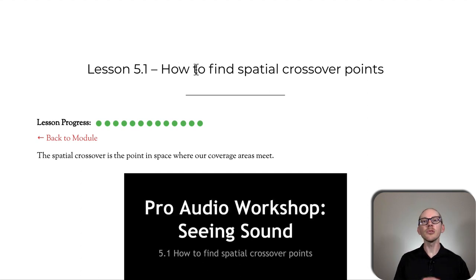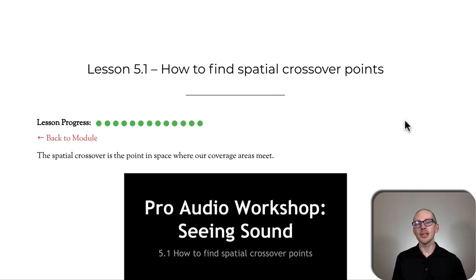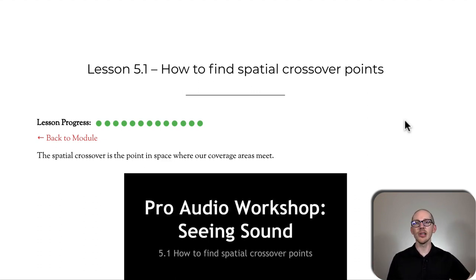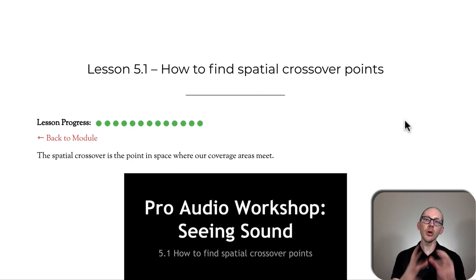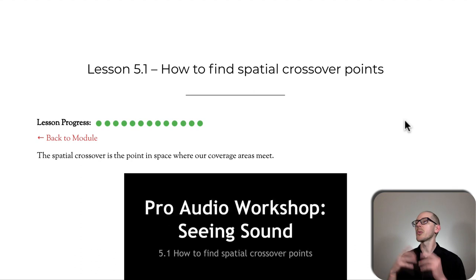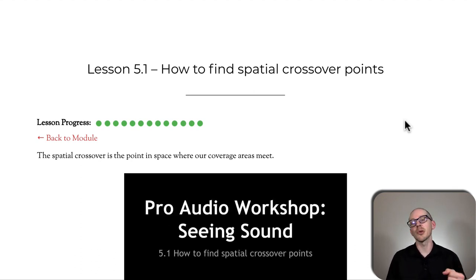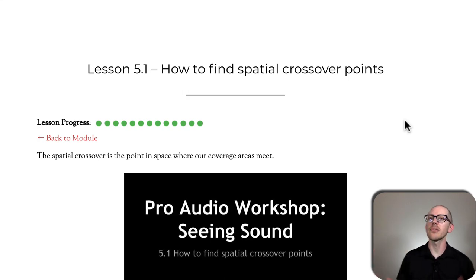Lesson 5.1 is how to find spatial crossover points. This could be a simple process of just picking up your microphone and moving it until you find where two sources arrive at equal level, and then setting the time. But we can also look at our designs — there's a process for estimating those locations so that when we get in the field, we don't have to spend half an hour moving our microphone around. We can look at our design and say it should be about here, let's just verify that.